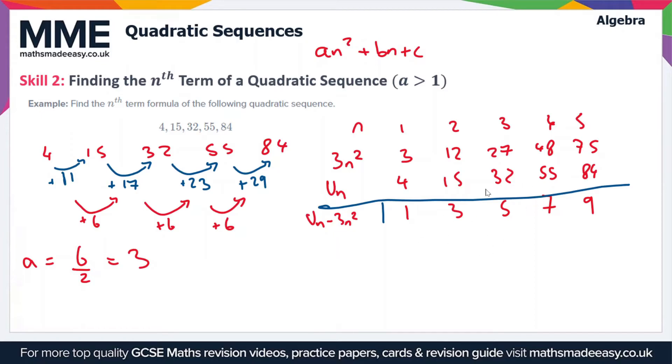So what we can do is work out the nth term of this linear sequence, and that will be the last part of our nth term formula. So from 1 to 3, we've got a difference of plus 2. 3 to 5 is a difference of plus 2. 5 to 7 is a difference of plus 2, and so is the difference between 7 and 9. So the difference between each term is plus 2, so that means our nth term of the sequence is going to be 2n.